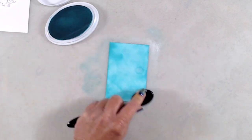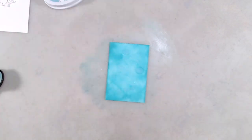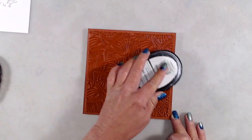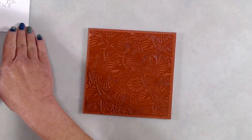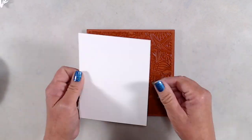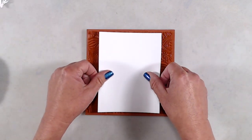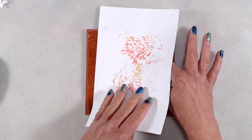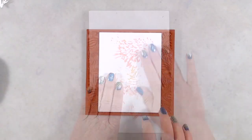Next I grabbed the Seashell background stamp and inked it up with some brown ink, and then I laid my cardstock, which measures four and a quarter by five and a half, right on top of that stamp and put a piece of scratch paper over that and rubbed really well to make sure that I got a nice impression.